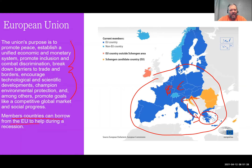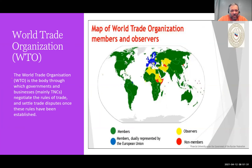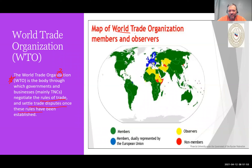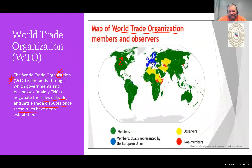The World Trade Organization — their goal is to be the body through which governments and businesses negotiate the rules of trade and settle trade disputes once these rules have been established. All the rules that countries play by in terms of international trade are in the WTO. If there's a conflict between, say, the U.S. and Canada over some kind of trade issue, those countries would take it to the WTO, and the WTO would be the judge, deciding who wins. Both countries would abide by that ruling. You can see most countries are members of the WTO, with very few non-members.